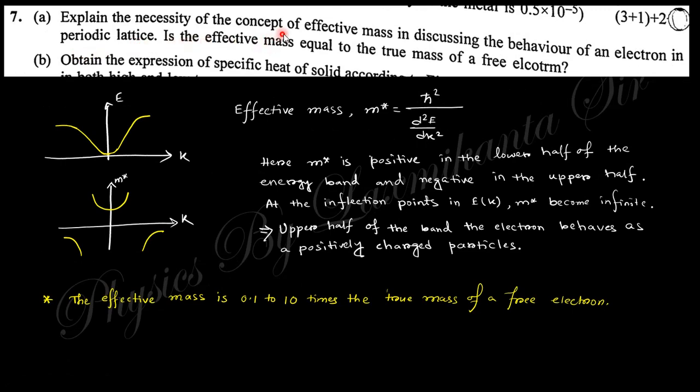Next question: explain the necessity of the concept of effective mass in discussing the behavior of electrons in periodic lattice. Within the periodic lattice, the electron energy varies with k value like that. The effective mass is h bar square by d²E/dk². If you take the double derivative of this curve, you will obtain this distinct curve. At these two points, the mass tends to infinity, but this is positive and this is negative. With the lower value of k, this is positive; with the upper value of k, it's negative. That means the lower value of k gives a positive electron, and the upper value of k gives the reverse value, which is the positron. Now the question is: is the effective mass equal to the true mass of a free electron? No, the effective mass is not equal to the true mass of an electron. It is 0.1 to 10 times generally, or higher than this.